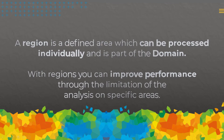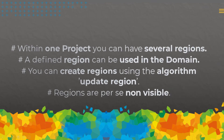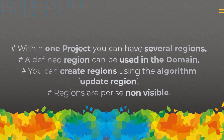You can improve performance through the limitation of analysis on specific areas, which helps during development of a rule set and also during production — you're going to save a lot of time if you're only doing analysis on areas you're interested in. Within one project you can have several regions stored in a variable. A defined region can be used in the domain. You create regions using the algorithm 'Update Region,' and regions are per se not visible — you can display them, but if you create a region you won't see it automatically.